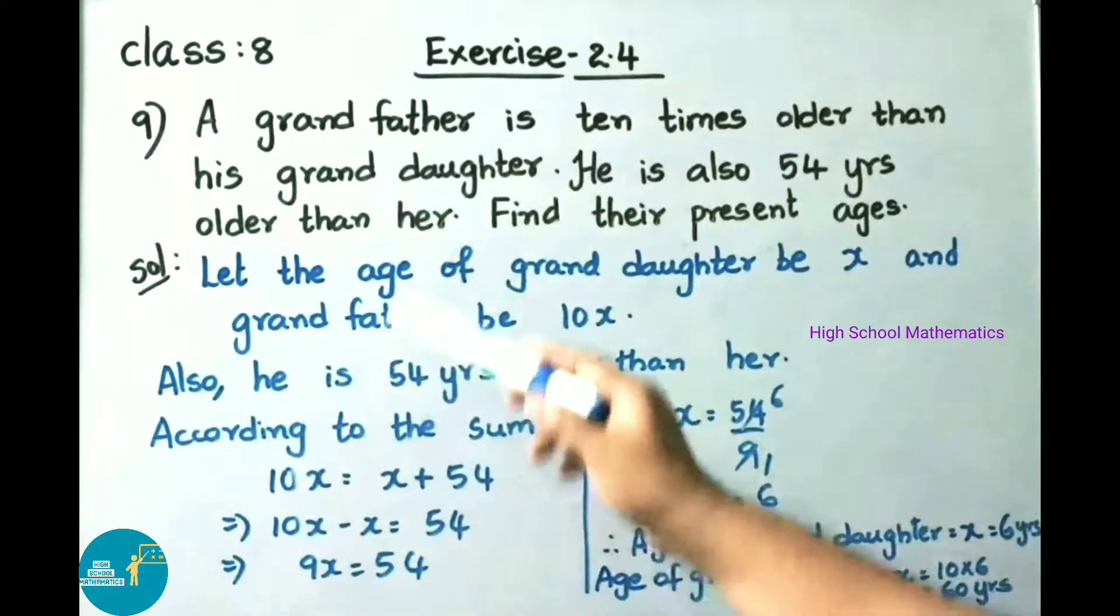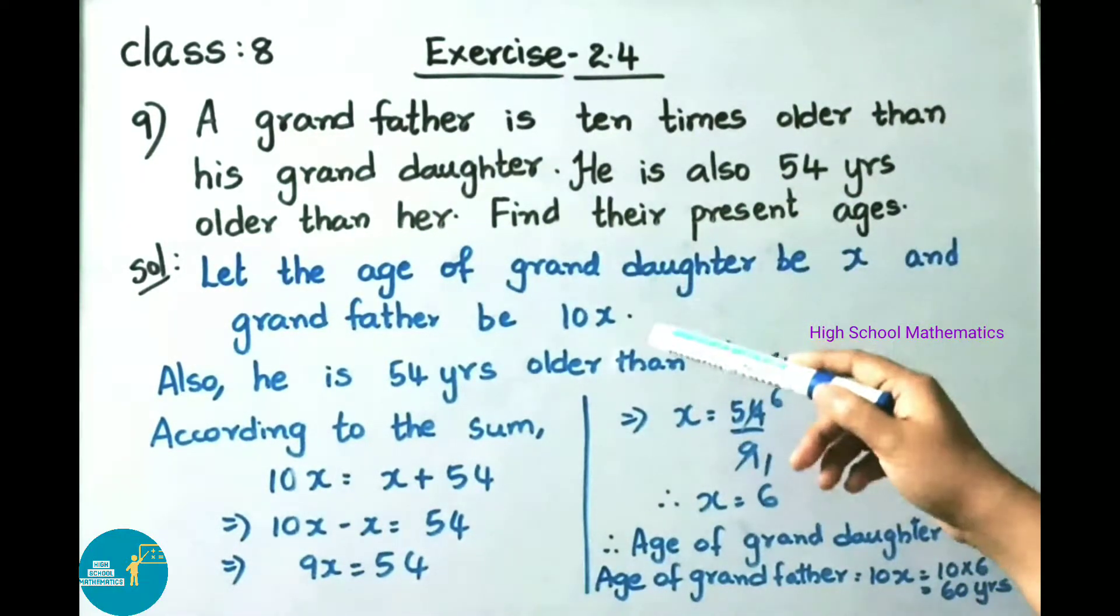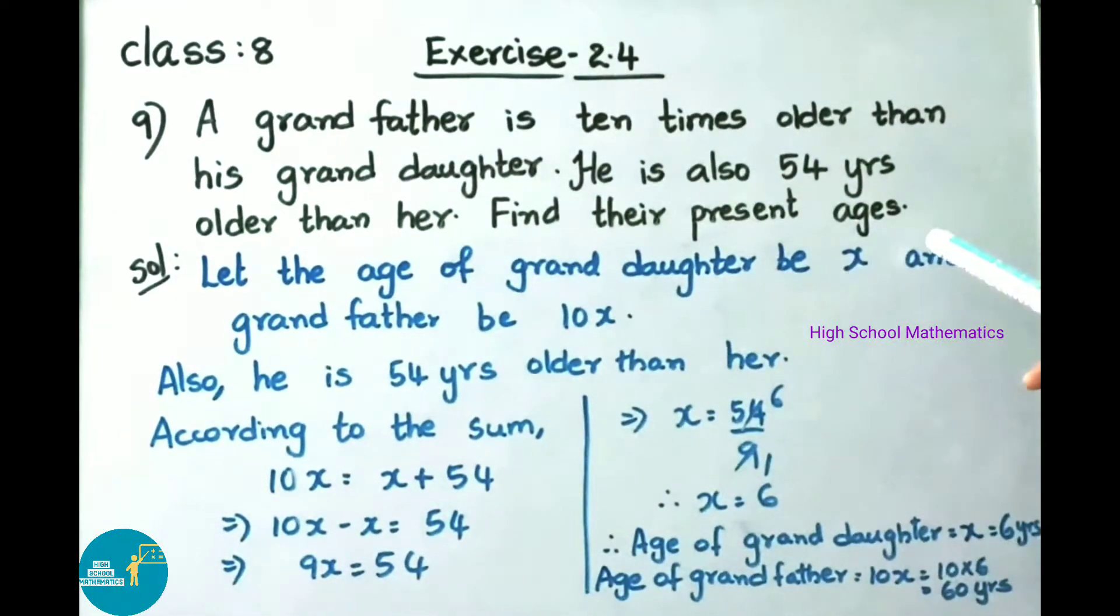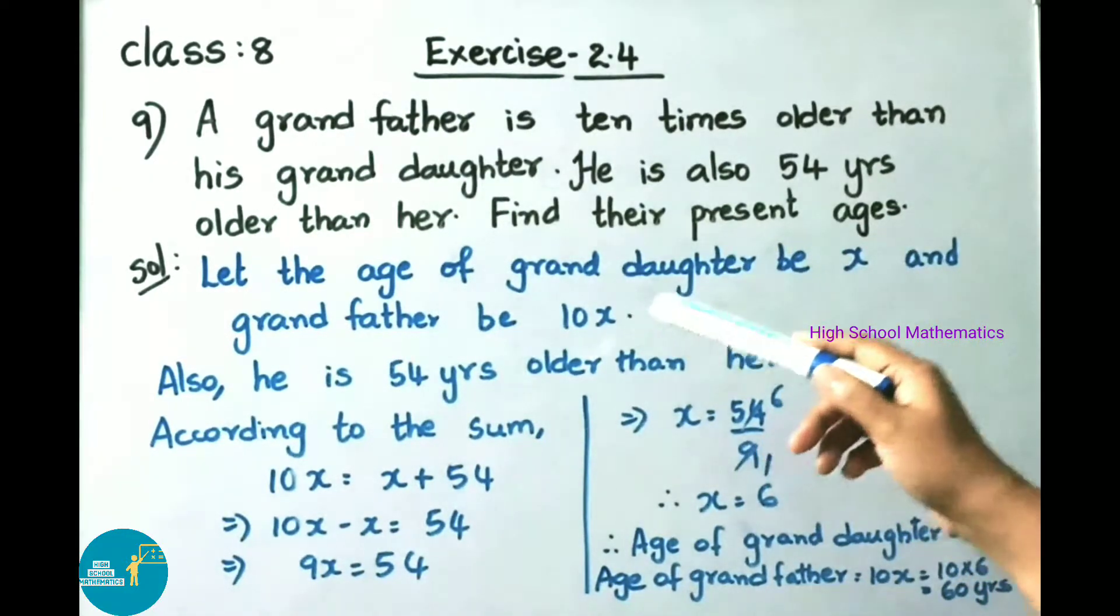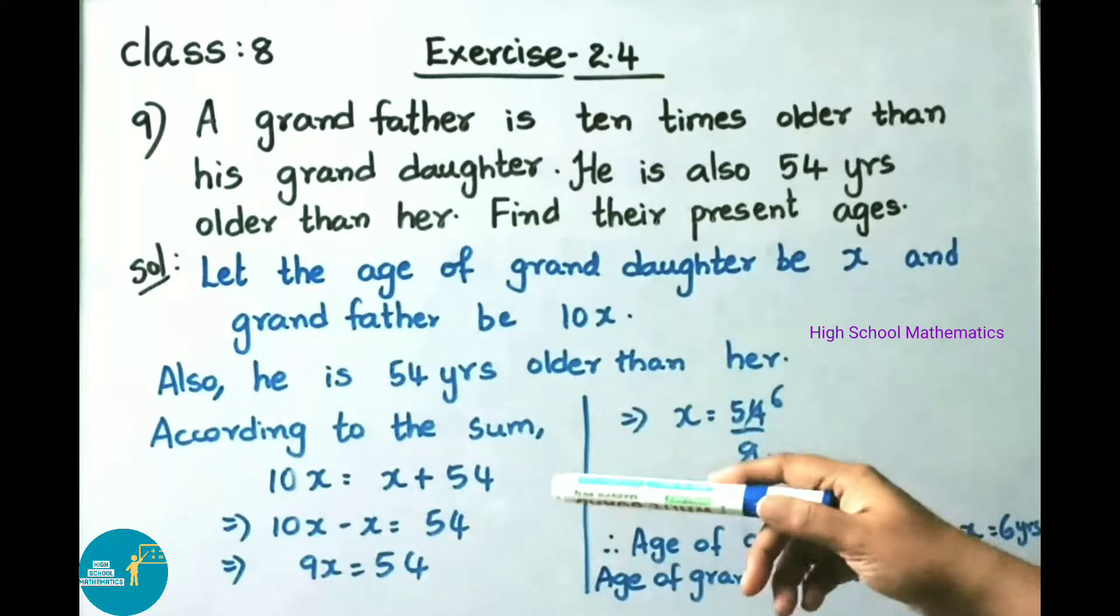See now question number 9. A grandfather is 10 times older than his granddaughter. He is also 54 years older than her. Find their present ages. Let us see the solution.